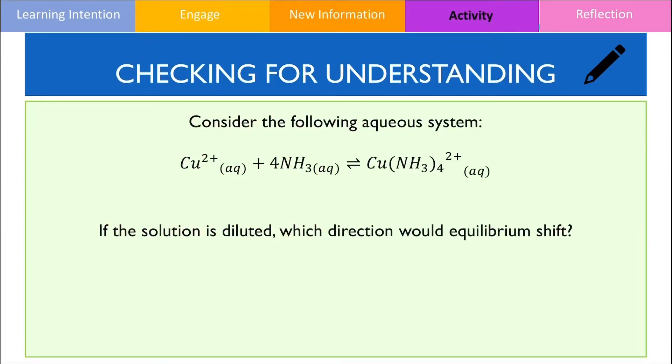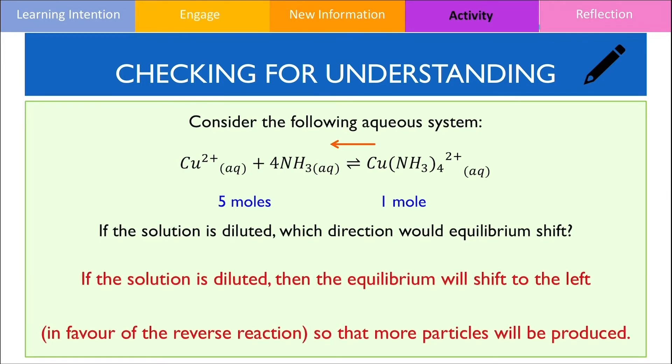In this reaction, there are more dissolved ions on the reactants. By adding more water, equilibrium will shift to the left, favouring the reverse reaction to increase the number of dissolved ions to partially oppose the effects of dilution.